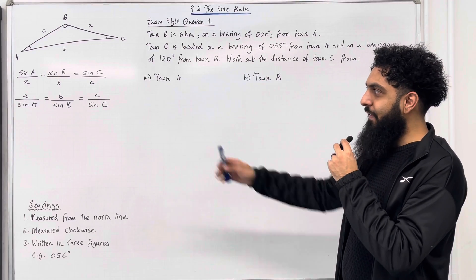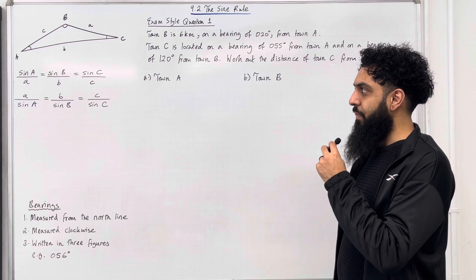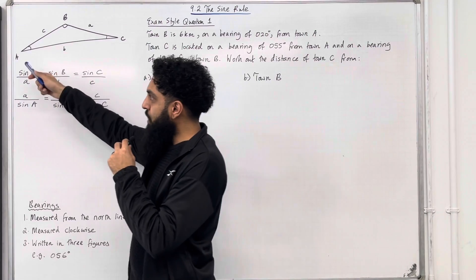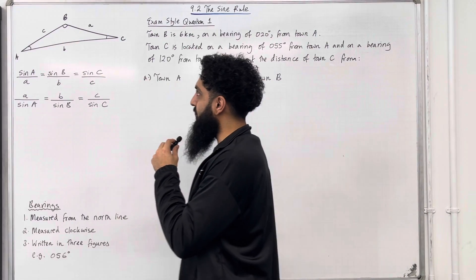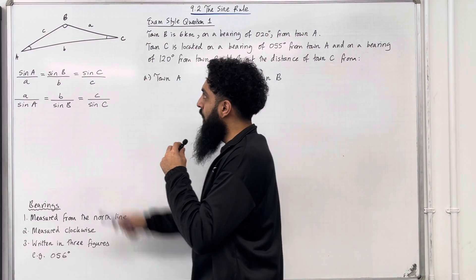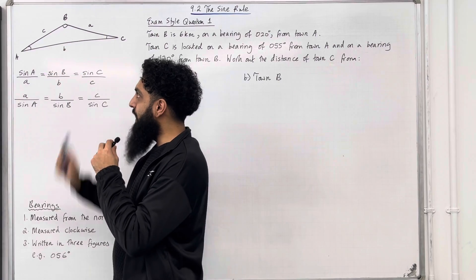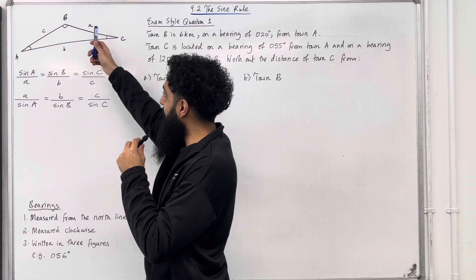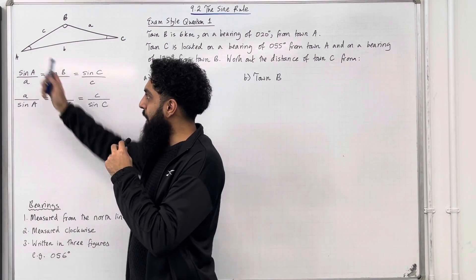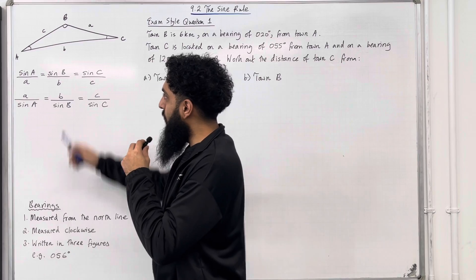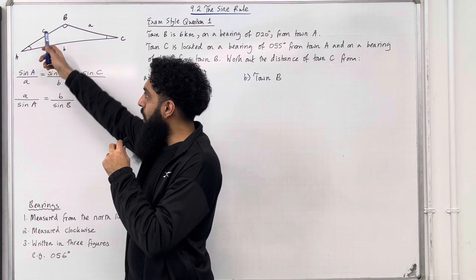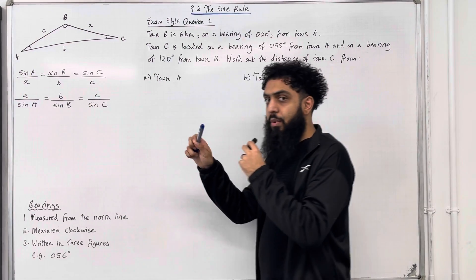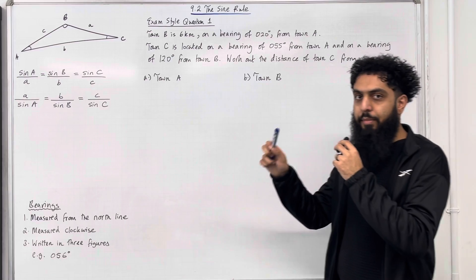Let's have a look at the key facts of this section. Consider the following triangle. Capital A, capital B, capital C represent angles. Lowercase a, lowercase b, lowercase c represent sides. Notice that lowercase a is opposite capital A, lowercase b is opposite capital B, and lowercase c is opposite capital C. This is a very important part of the labelling process.